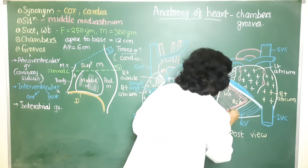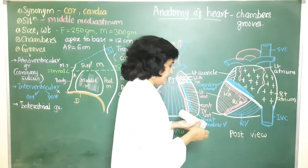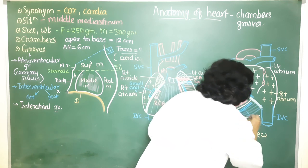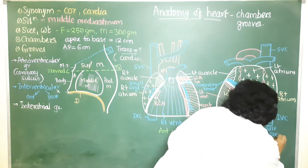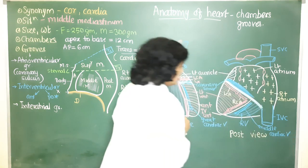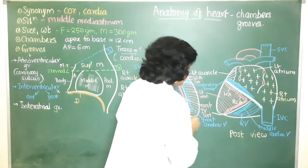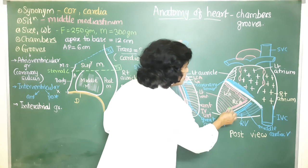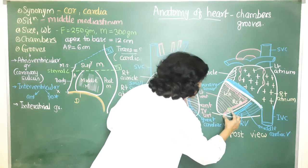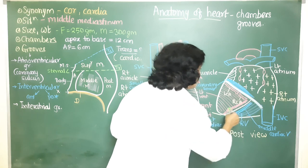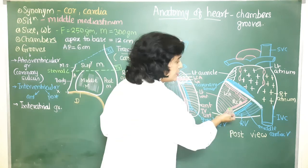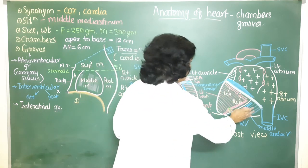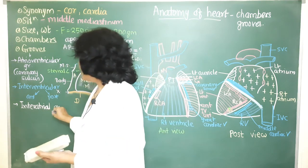The posterior interventricular groove lodges the posterior interventricular artery, usually a branch of the right coronary artery, and the middle cardiac vein. There is also an anastomosis between the anterior interventricular and posterior interventricular arteries, the site of which usually lies at the junction between the anterior one-third and posterior two-thirds of the posterior interventricular groove. This groove is present on the inferior or diaphragmatic surface of the heart.